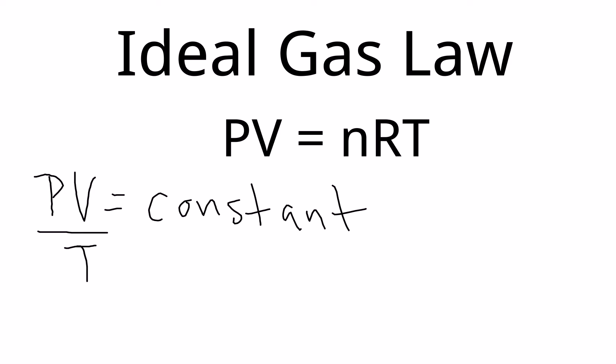And then Avogadro stated that V over N is going to be equal to some constant. And so if V, again, is on top, I can put N on the bottom. I get PV over NT equals a constant.